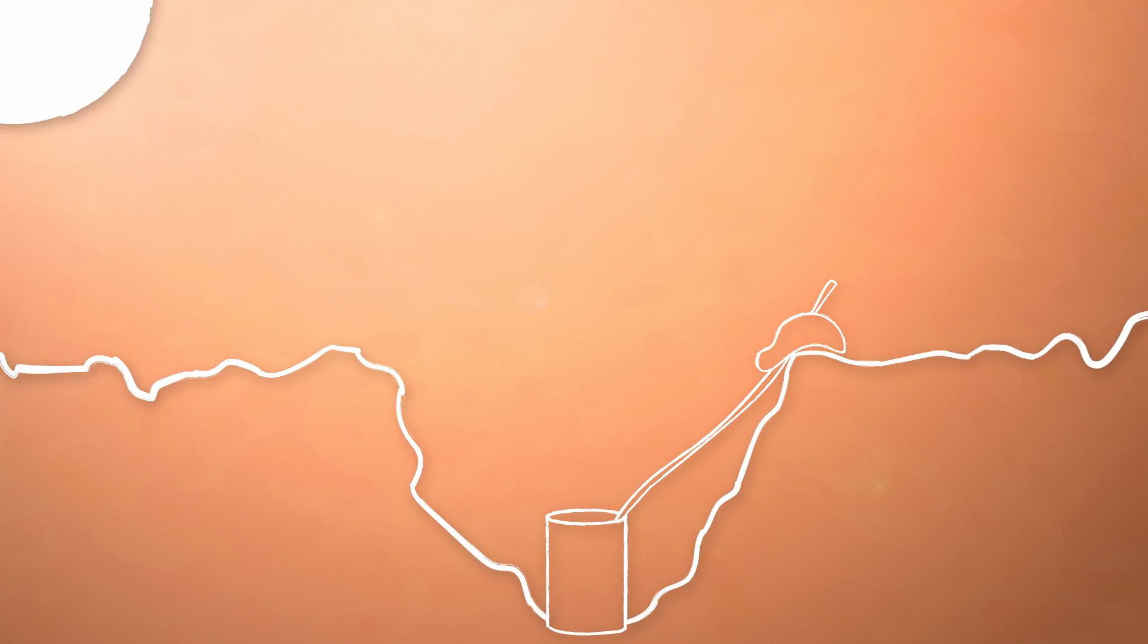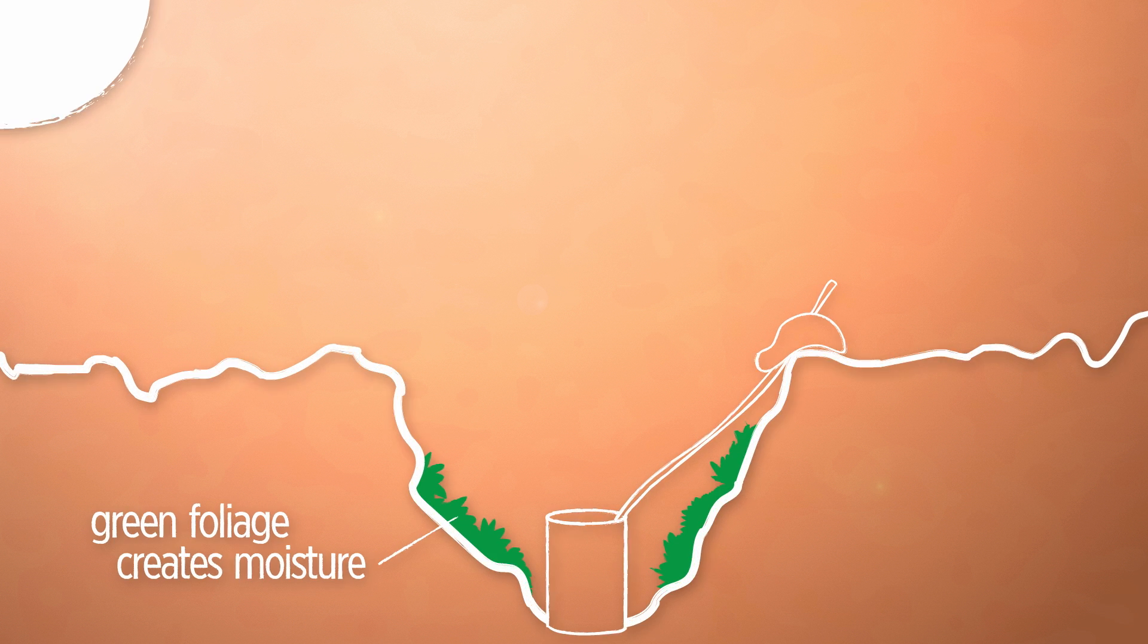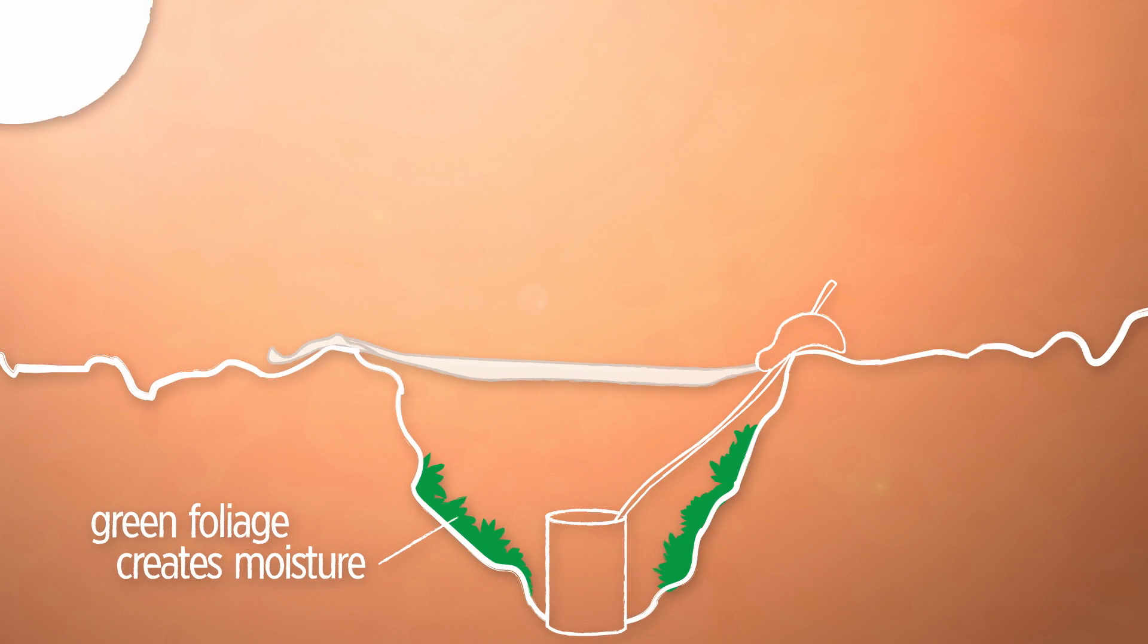If you have some leaves or other greenery that you know for sure are not toxic, tear them up and add them to the walls of the bowl. Place the plastic loosely over the hole and hold down the edges with rocks.